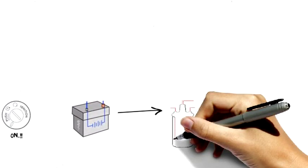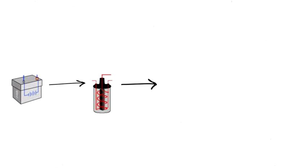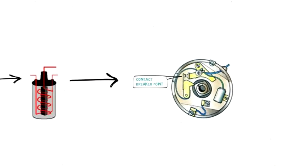When the ignition switch is turned on, current flows from battery to ignition coil, where one end is connected to the contact breaker.